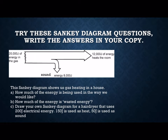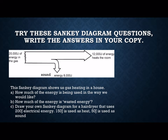Let's look at an example question. Draw this diagram into your copybook. Note down that 20,000 joules of energy are in gas: 12,000 joules of energy goes to heating your room, whilst 8,000 joules are released as sound energy. This diagram shows us heating in a home. Question A: how much energy is being used in the way we would want it? Question B: how much energy is wasted? Then do Question C: draw your own Sankey diagram for a hairdryer that uses 200 joules of electrical energy going in, 150 joules used as heat, and 50 joules used as sound. Note which is useful and which is wasted.